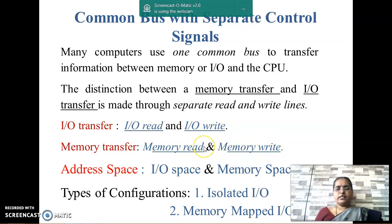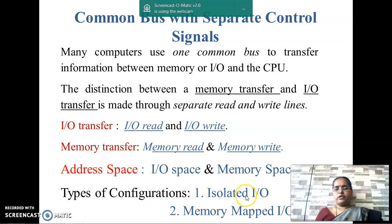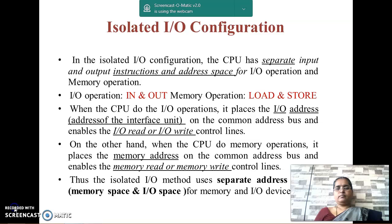Every computer system consists of address space. There are two different address spaces: IO space for IO devices and memory space for memory devices. Depending upon this address space, there are two types of configurations: isolated IO and memory mapped IO.